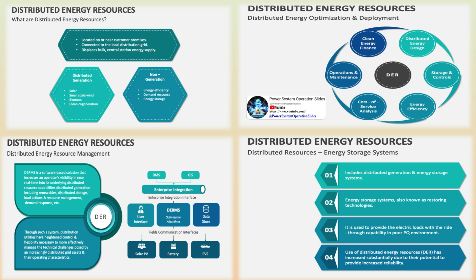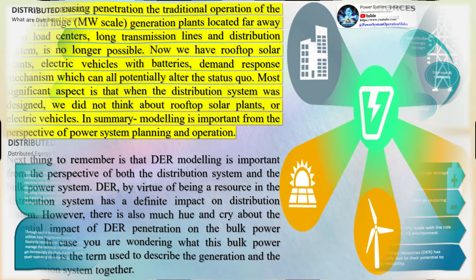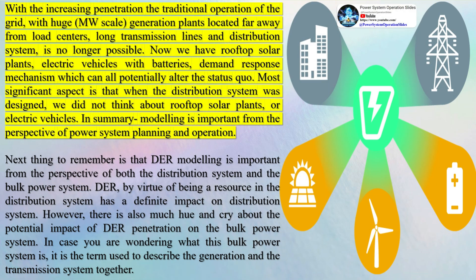Some of the potential impacts of DER on the reliability of the power system, as identified by experts, include: visibility — lack of DER data and its implications for the operation, planning, and design of the bulk power system; coordination between resources connected to the bulk power system; the effect of DER daily generation profiles on system unit commitment and ramping needs; and the effect of distribution-connected variable PV and wind output on day-ahead load forecasts.